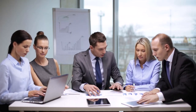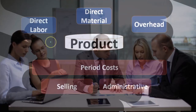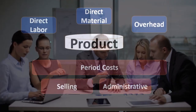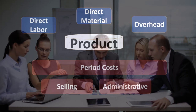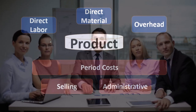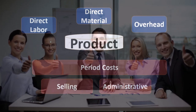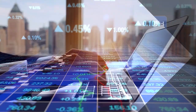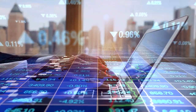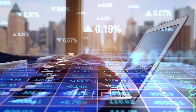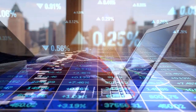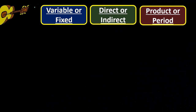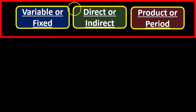Most of our time here is going to be focused on the production costs to make the product — because that's the most interesting part, where all the activities happen within a manufacturing company that we have to track. That's what's different from other types of industries, and therefore that's where we want to focus our time. Looking at some examples of the classifications we've had so far: variable costs versus fixed costs, direct or indirect costs, and product or period costs.